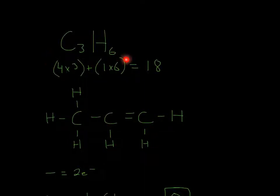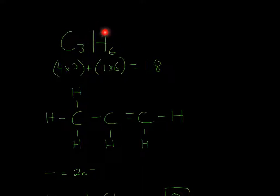For C3H6, we first look at the group number. C is in group 4, so it will be 4 times the subscript, which is 4 times 3. H is in the first group, so it'll be 1 times 6 — 6 is the subscript — 1 times 6, and that will all equal 18.